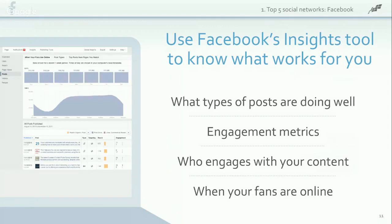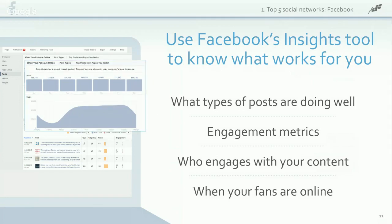Everyone who uses Facebook for marketing wants to know the best time and day to post. The answer is different for every page because everyone's audience is different. Fortunately, Facebook Insights shows the best day and time to post for your audience. Click the Posts tab and then the When Your Fans Are Online section. This report looks at the past seven days and shows how many of your fans were using Facebook for each day of the week and each hour of the day, making it easy to find the most popular times and schedule your content accordingly.